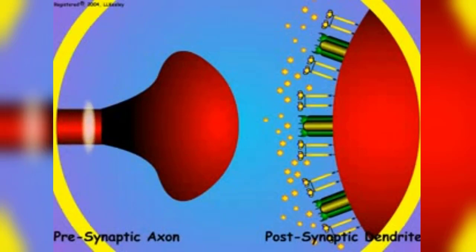When an action potential enters the presynaptic axon terminal, the terminal releases a special chemical called a neurotransmitter. The message encoded in the frequency of the presynaptic action potentials is converted by the presynaptic axon into neurotransmitter chemicals that are released and carry the message across the synaptic gap to the postsynaptic dendrite.